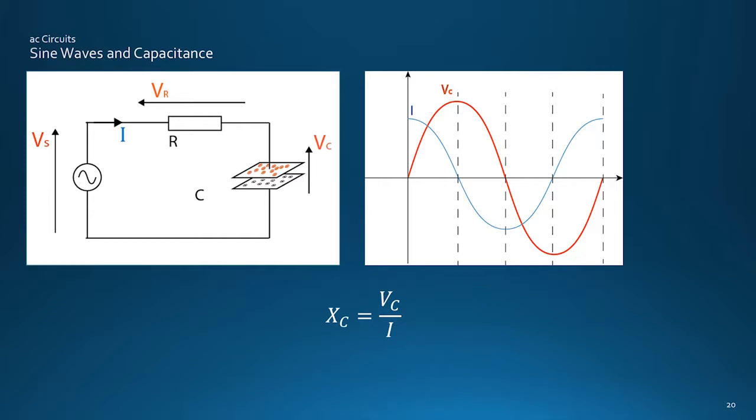The impedance, or capacitive reactance Xc, is found by dividing the sinusoidal voltage Vc across the component by the sinusoidal current I passing through it, which has a different phase.